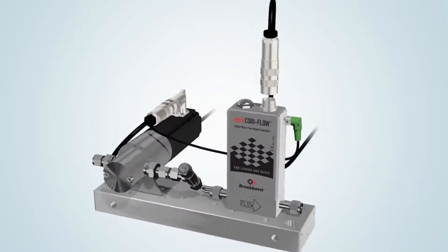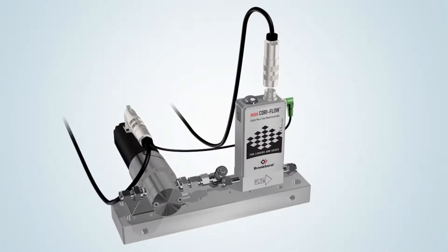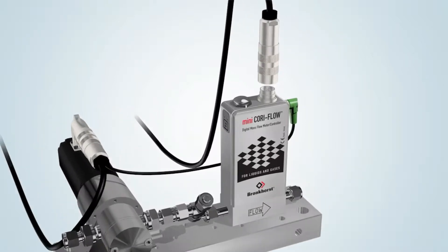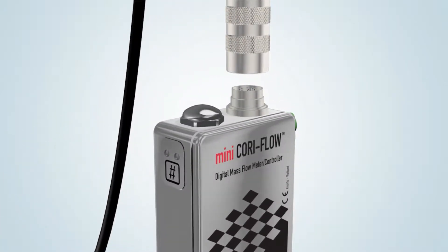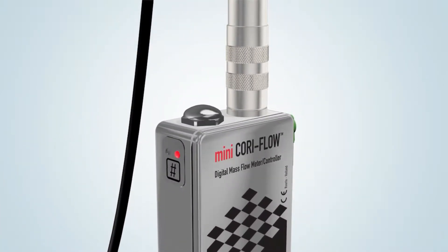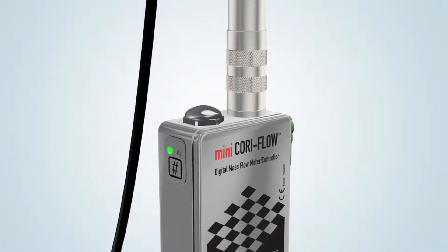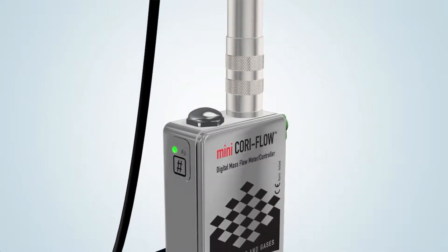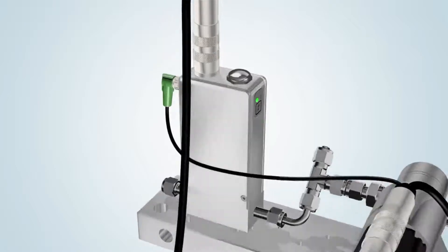A Bronkhorst Mini CoriFlow instrument requires a voltage of between 15 and 24 volts. When the supply voltage is connected, the LEDs show the current status. The instrument is ready for use when the green LED lights up.